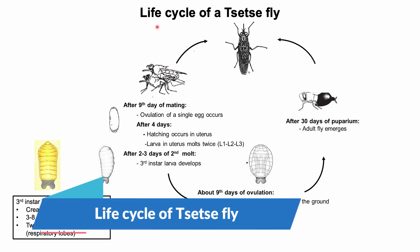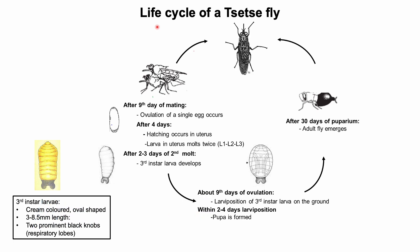Life cycle of a tsetse fly: the life cycle is like that of typical dipterian flies. The developmental stages comprise larvae, pupae, and adult. Mature female and male flies mate together. It is interesting that once females are inseminated they remain fertile throughout their life. After the ninth day of mating, ovulation of a single egg occurs at a time. After fertilization the fertilized egg moves posteriorly to the uterus, and hatching occurs here in the uterus.